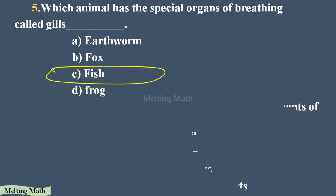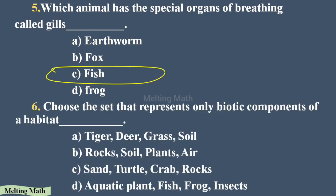Question six: choose the set that represents only biotic components of a habitat. Biotic means living things. Option D is the correct answer — aquatic plants, fish, frogs, and insects all come under biotic, meaning living things. So option D is the correct answer for the biotic community, as all these things are living organisms.